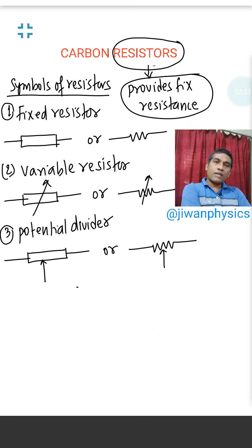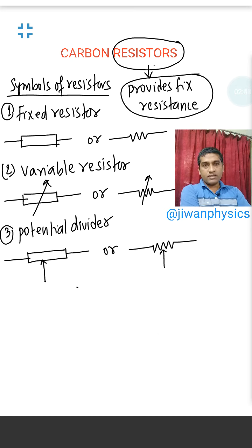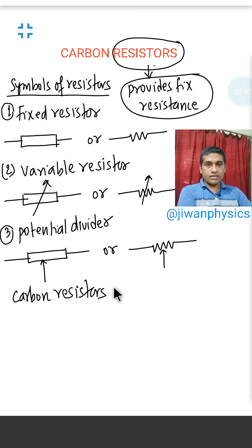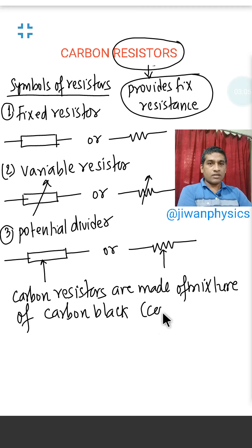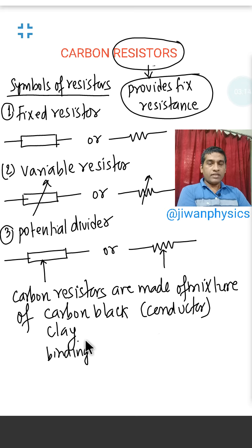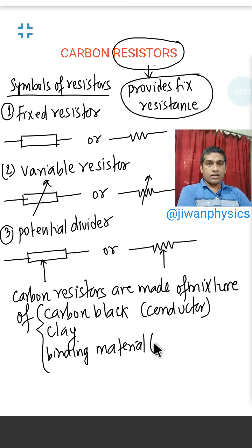Now let us discuss carbon resistors. Carbon resistors are made of a mixture of carbon black, clay, and binding materials. Carbon black is a conductor, and the binding material is a non-conductor.